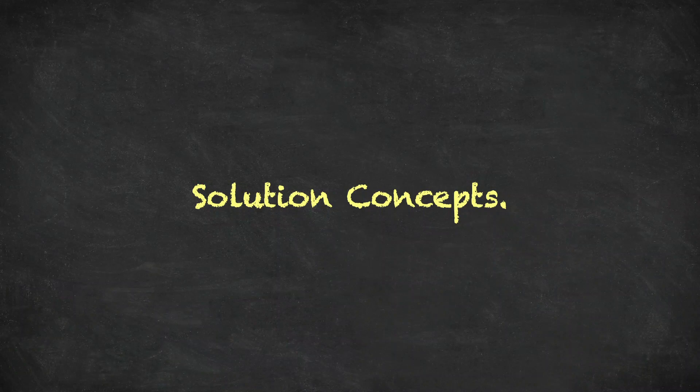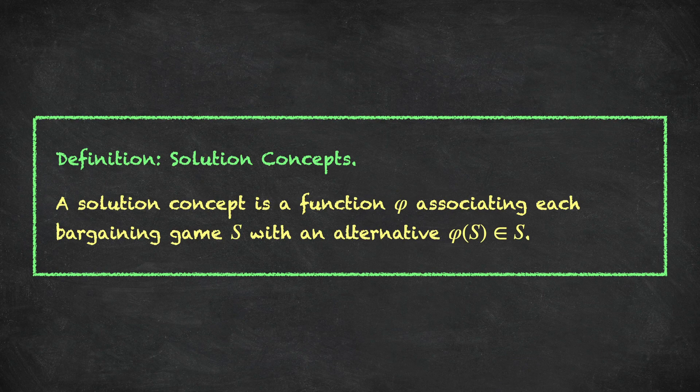Now that we've introduced the idea of a bargaining game, the next step is to introduce what's called a solution concept. A solution concept is a function — we'll denote a general solution concept as phi — and this function associates to each bargaining game an alternative, so an element from that bargaining game, which will be the solution for that game.